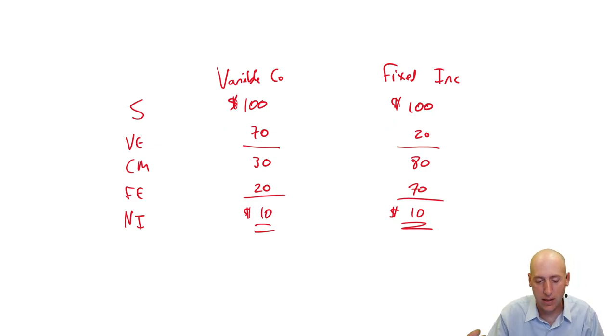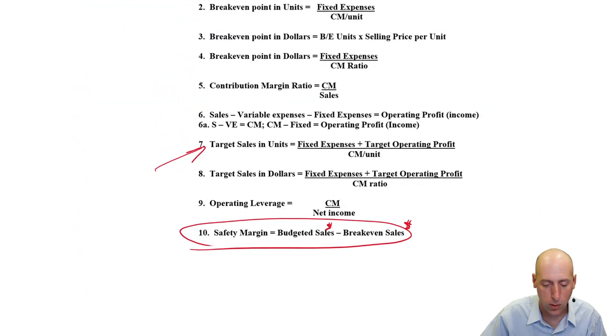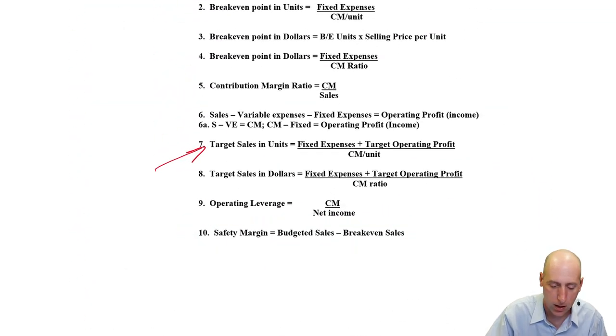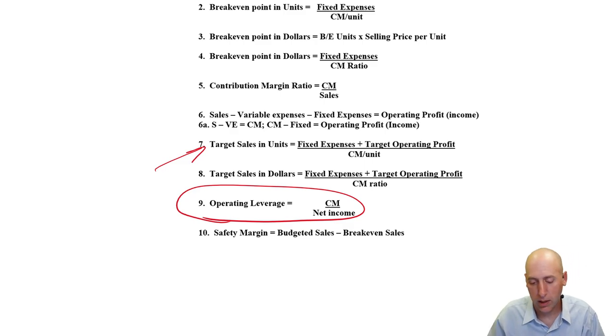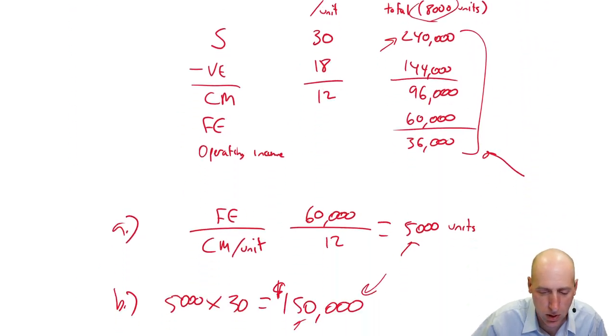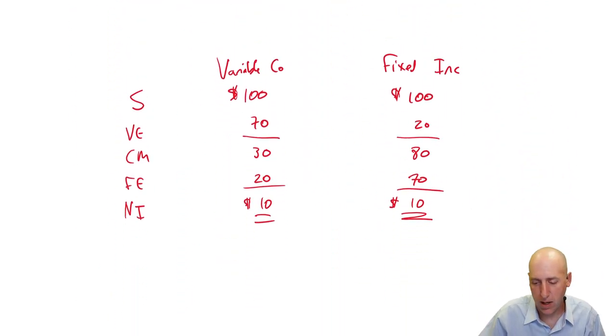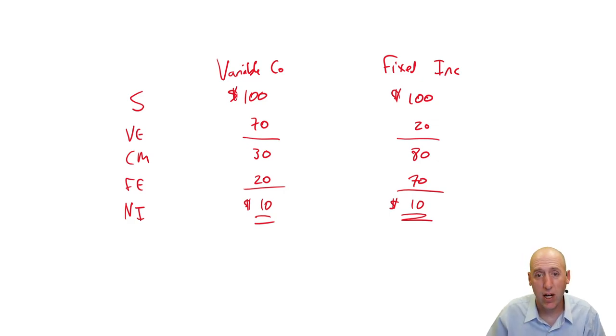I'll explain why with real companies in a minute, but let's just contemplate this situation. So the accounting tool we have is something called the degree of operating leverage. And there's a formula for this on our chart here. Operating leverage, CM divided by net income. This is just a factor. It's just a number. It's not a dollar or percentage, but let's compute it for these two companies.